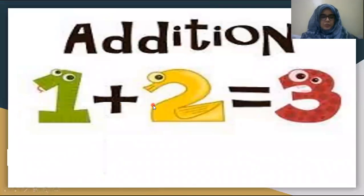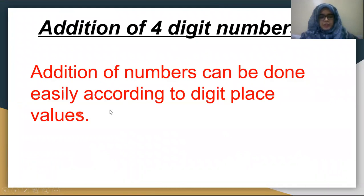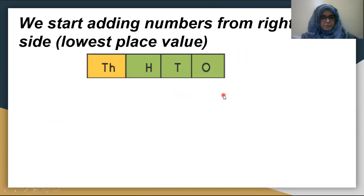The topic is about addition. Addition of numbers can be done easily according to their digits place value. In previous class we have learned how to add any number with the help of its place value. When we start adding a number, we start from the right side. From the right side there is the lowest place value which is the ones. One is the lowest place value.